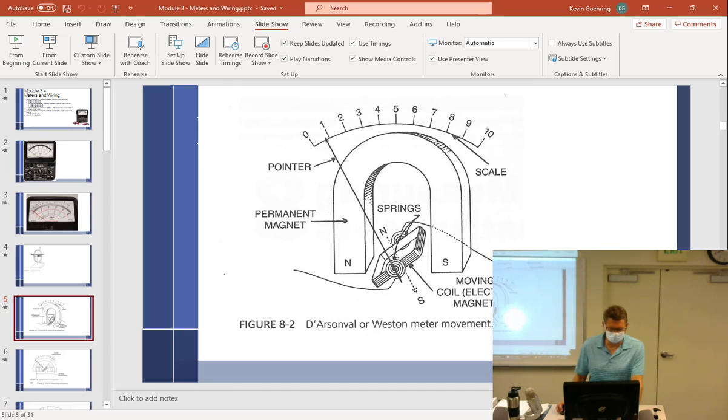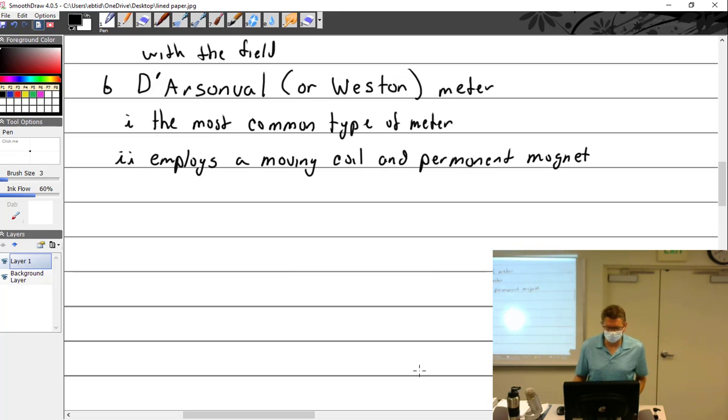Back to here, moving a coil and a permanent magnet. The indicating needle is attached to a movable coil.